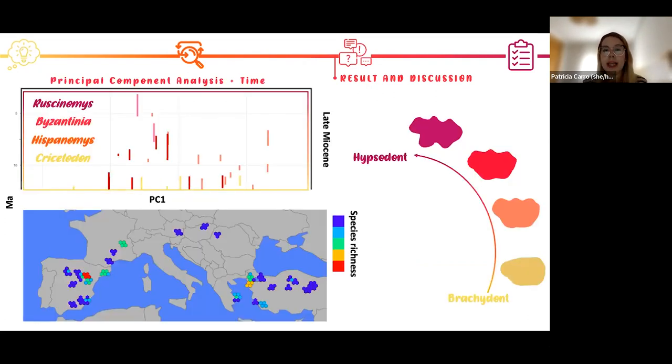After that, during the late Miocene, the four genera have been recorded. But in this case, we don't have any record in Asia, and we only have records in Europe, Asia Minor, and the Iberian Peninsula. And we can see a pattern from brachiodont molars with a straight morphology on the labial region to hypsodont molars with a very marked trilophodont morphology on this labial region. You can see Cricetodon is only recorded in the lower part of this late Miocene.